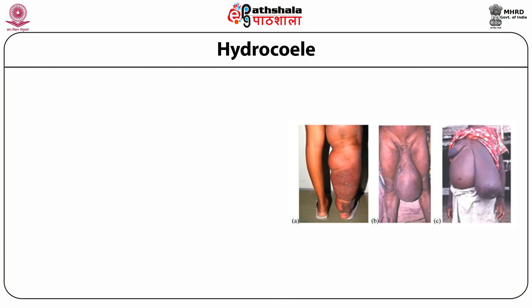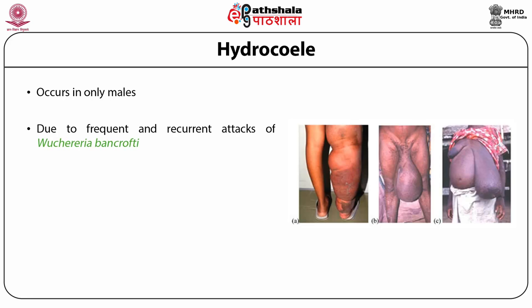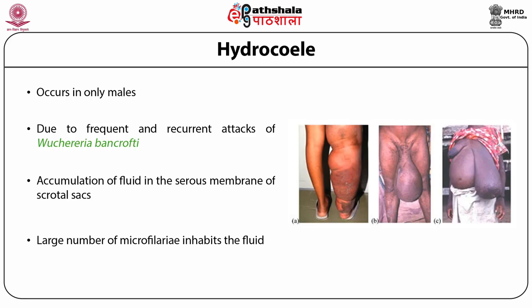Another disease caused by Wuchereria bancrofti is known as hydrocele. This affects the scrotal sacs and thus can be observed only in males. Hydrocele appears due to frequent and recurrent attacks of Wuchereria bancrofti, resulting in accumulation of fluid in the tunica membrane of scrotal sacs surrounding the testes. Large numbers of microfilariae enter the fluid but die soon due to unfavorable environment. Chronic infection increases the swelling, and if left untreated, it can lead to enormous growth of the scrotum. Hydrocele is the most prevalent and highly painful manifestation of Bancroftian filariasis. In endemic areas, it is a major cause of disability, disfigurement, sexual burden, social stigma, and economic loss. It is more common in East Africa, Japan, and China, but less common in India.